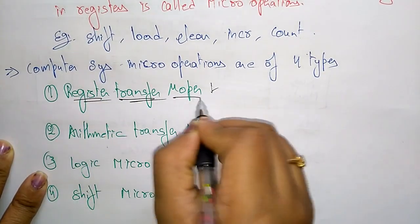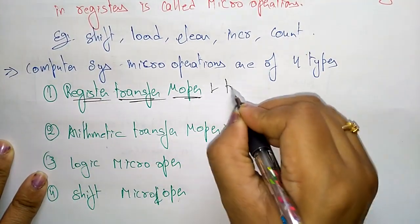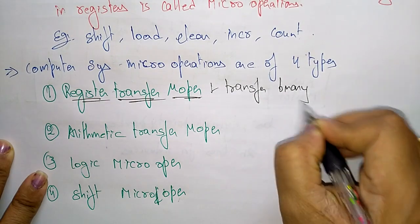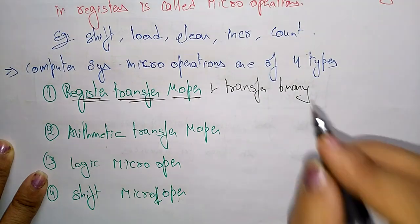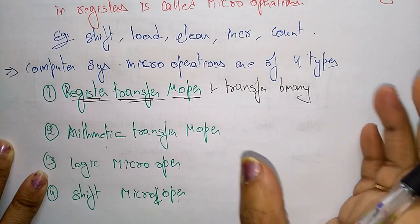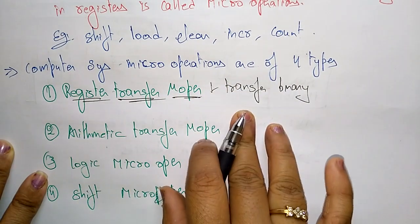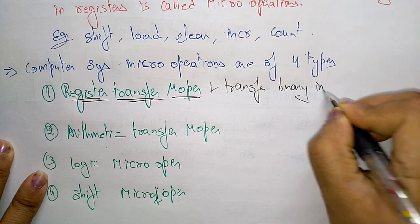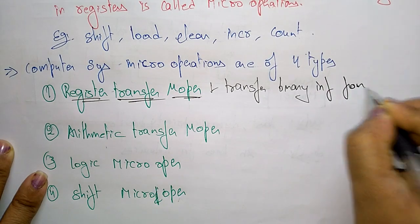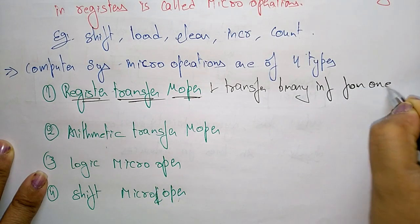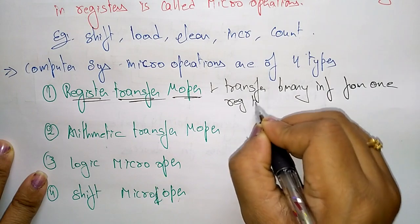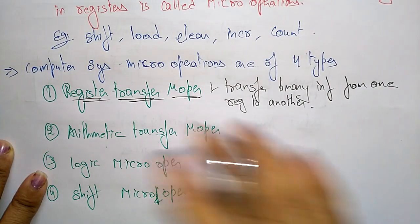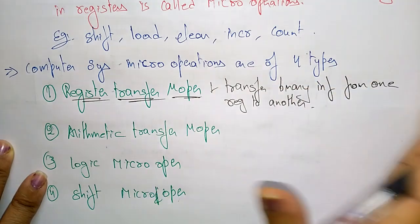Register transfer micro operation simply transfers binary information from one register to another register. It doesn't perform any computation — it only transfers binary information. Registers always hold binary data.